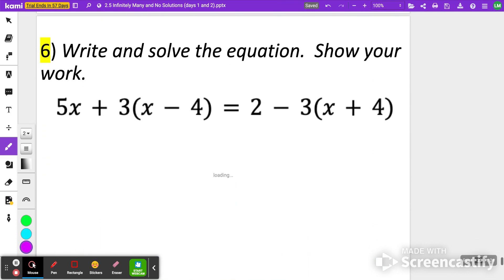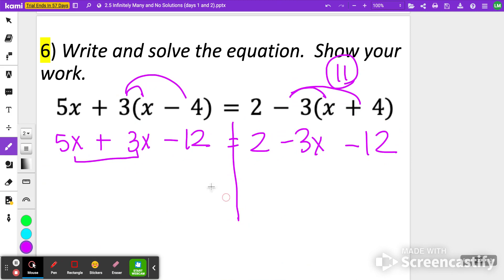Last one, number six, pausing and solving. When you're done, click play. First thing you did was to hopefully distribute both sides of the equation. So I'm going to have 5X plus 3X minus 12 equals 2 minus 3X minus 12. Combine any like terms. On the left side, I have 5X plus 3X. That is 8X minus 12. And on the right side, I can combine 2, being very careful, and negative 12. That's a negative 10 minus 3X.